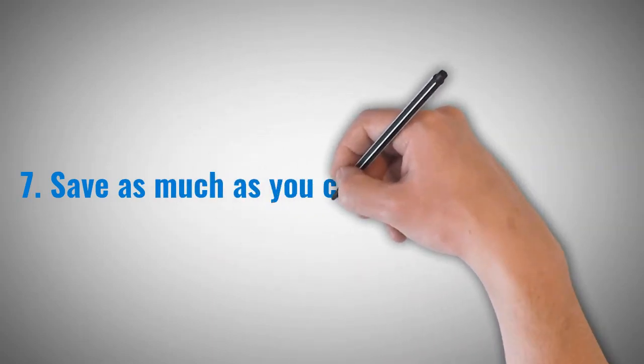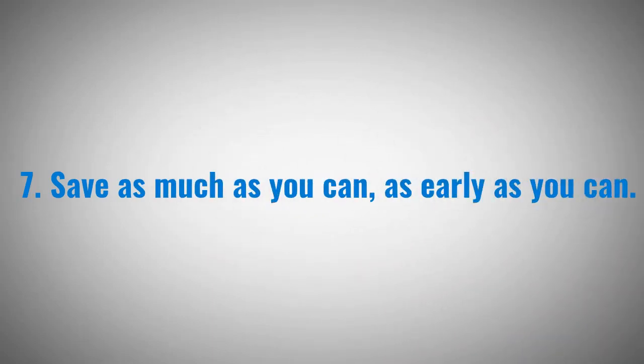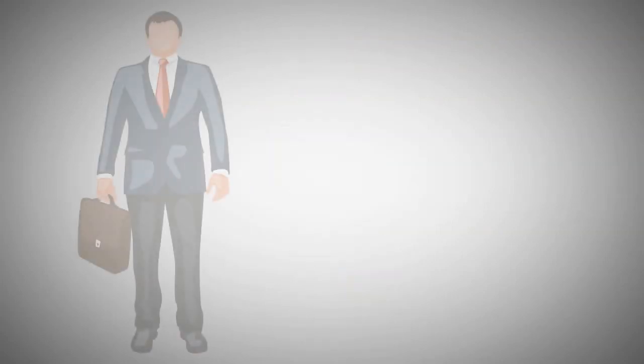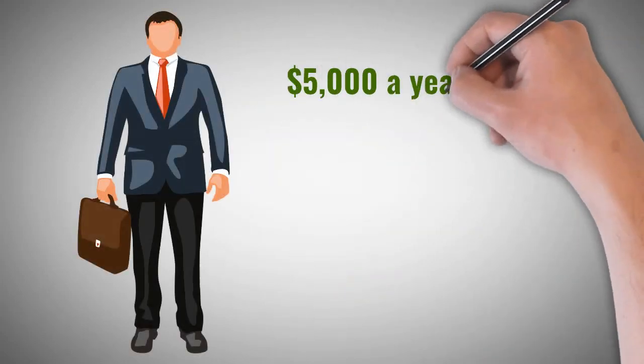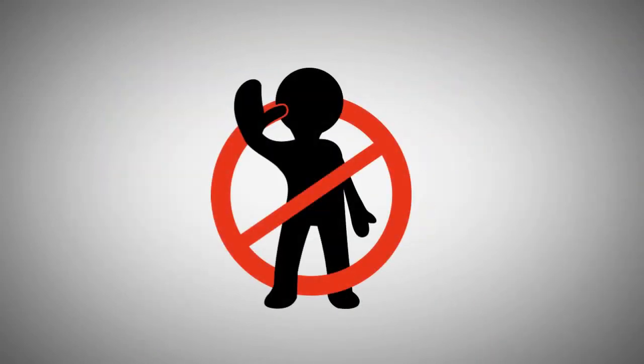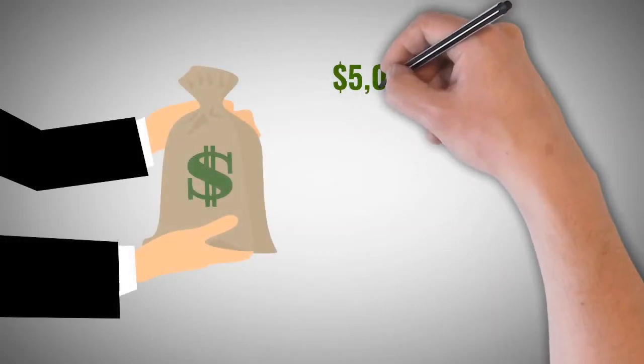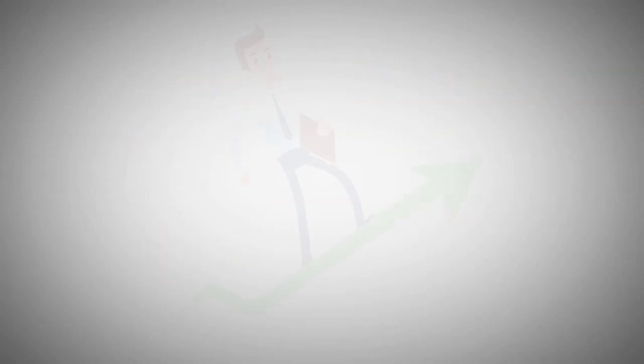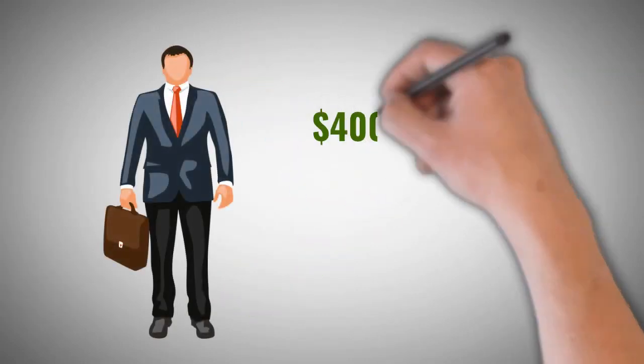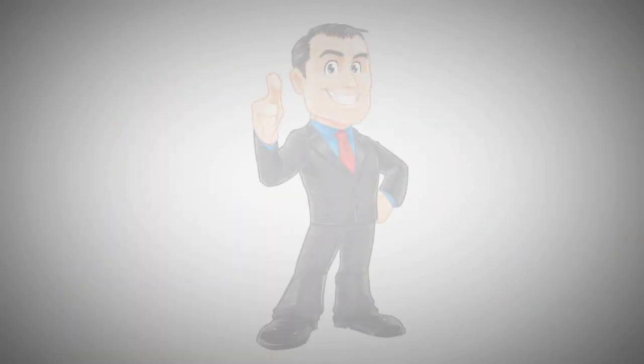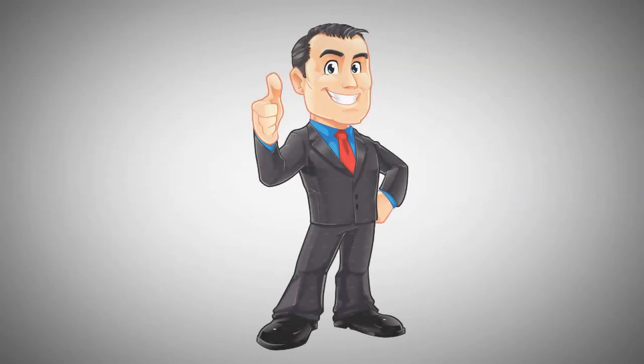7. Save as much as you can, as early as you can. Saving early allows you to take advantage of the power of compounding. If Person A saves $5,000 a year from age 25 to 40 for a total of $75,000 and then never invests another penny, and Person B invests $5,000 every year from 40 to 65 for a total of $125,000 invested, assuming 5% growth, Person A will end up with more than $400,000 by retirement, while Person B will only have $256,000, simply because Person A started saving earlier, even if she put away less.